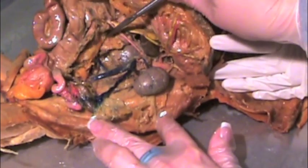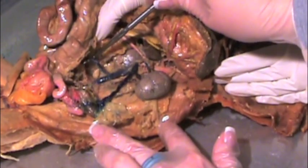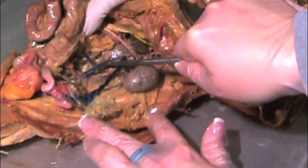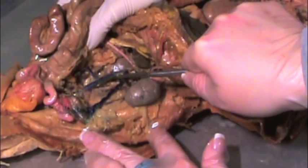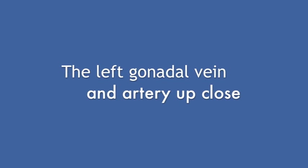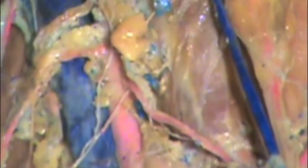The gonadal vein on the right-hand side is seen here. On the right-hand side of the cat, just like in the human, the gonadal vein drains into the inferior vena cava. If we move from the cat's left kidney down along the left gonadal vein, we will find the gonadal artery. The gonadal artery comes off of the abdominal aorta and is seen here.